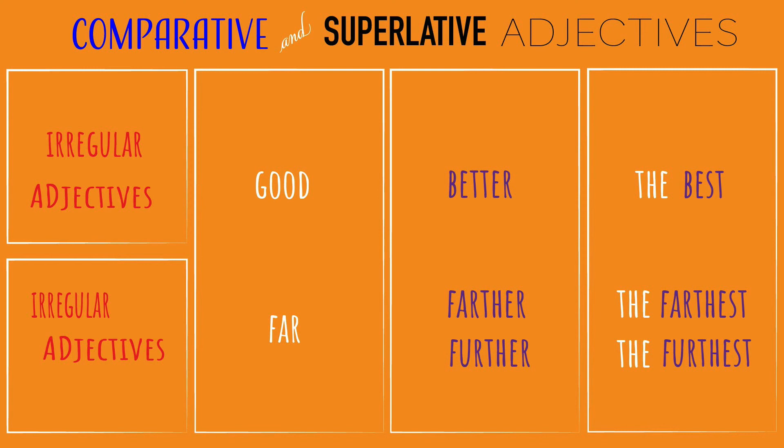Here are some examples of irregular adjectives. We change the spelling of the word in an irregular adjective. Good, better, the best. Far, farther or further, the farthest or the furthest.